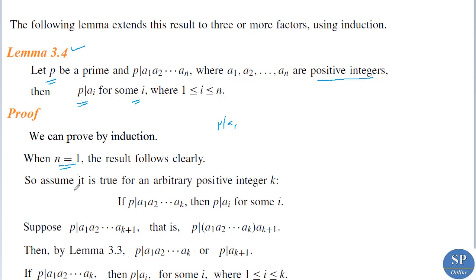Now assume that the result is true for an arbitrary positive integer k. That is, if p divides a₁·a₂·…·aₖ, then p divides aᵢ for some i. That is the inductive assumption.